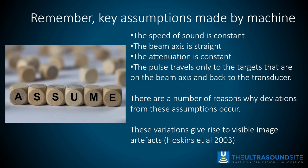What we're seeing on the screen is not a direct picture of what's going on inside the body. Rather, we need to think of it as an image being created from a set of data — data that can become skewed because of assumptions made by the ultrasound machine and by the way the image is actually being created. This is really important when we think about anisotropy.